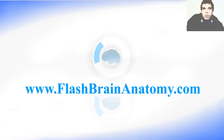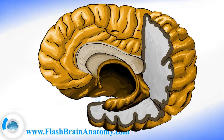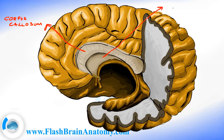To learn more about the limbic system and all its parts, please check out my videos and visit my website flashbrainanatomy.com. Now let's write this all down. This over here was the corpus callosum, this was the septum pellucidum, and this was the anterior commissure.